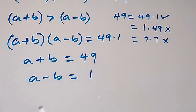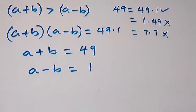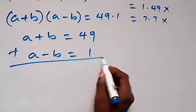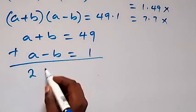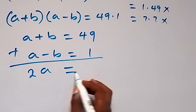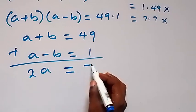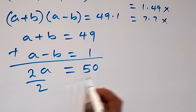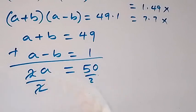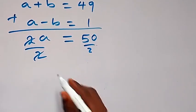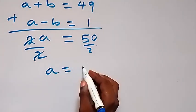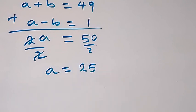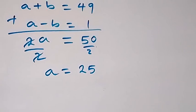We solve these two equations simultaneously. Adding them eliminates b: 2a = 50, so dividing both sides by 2 gives a = 25.